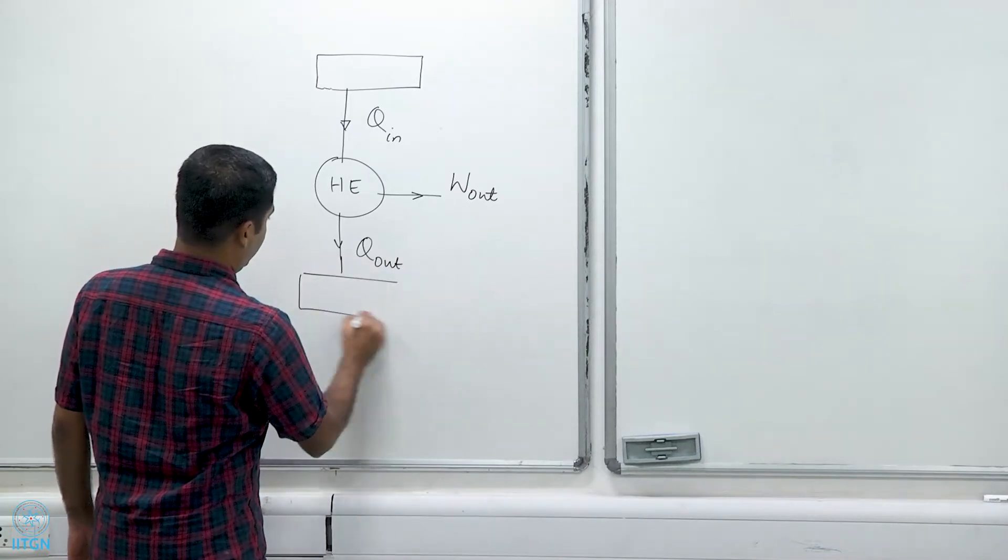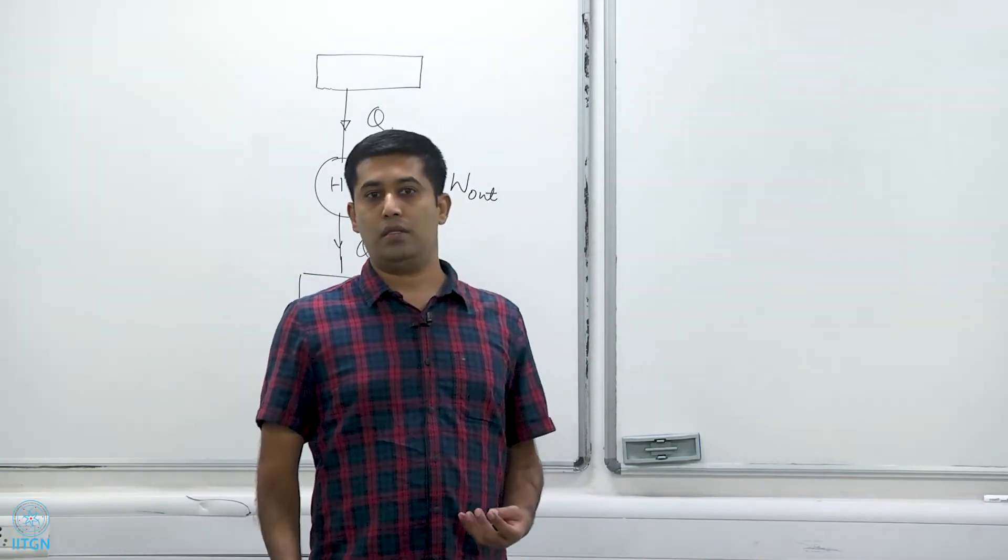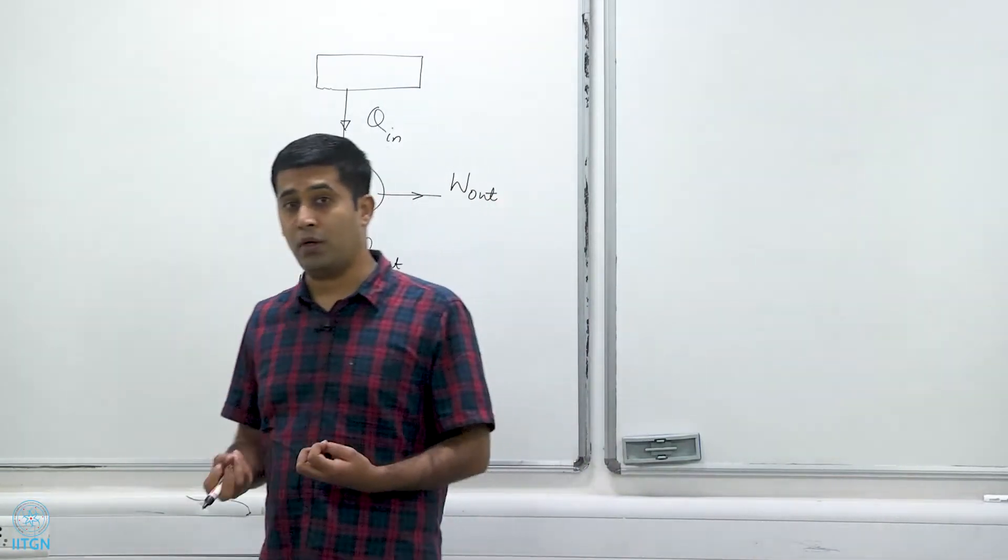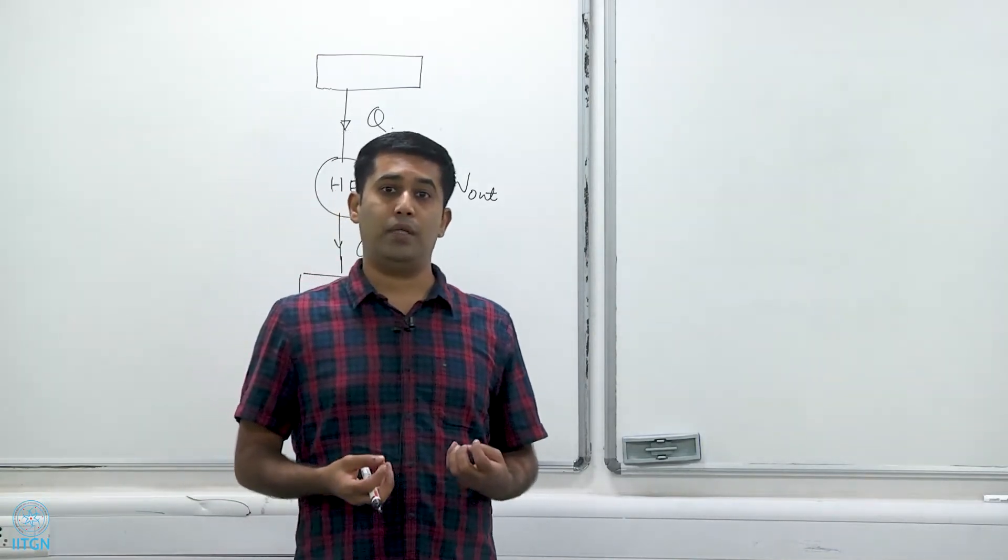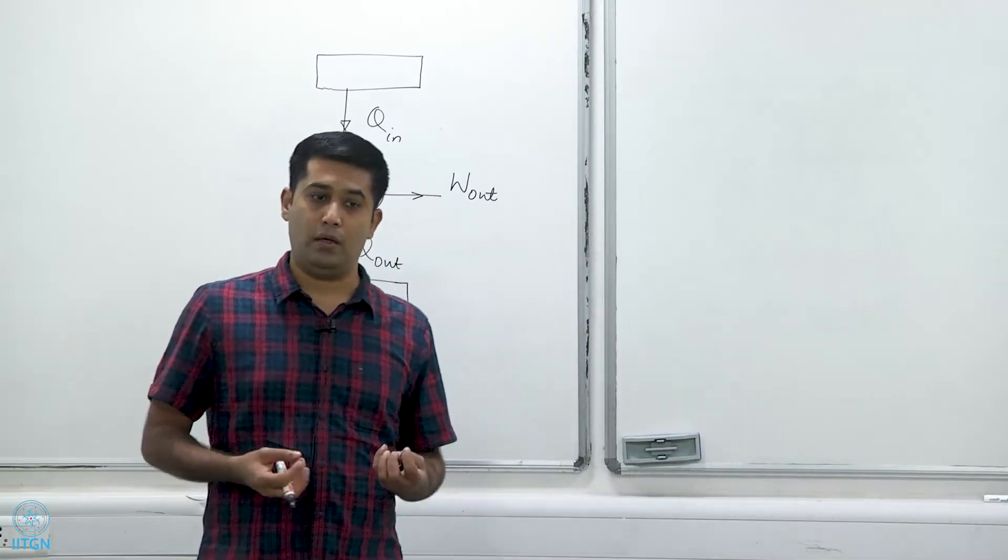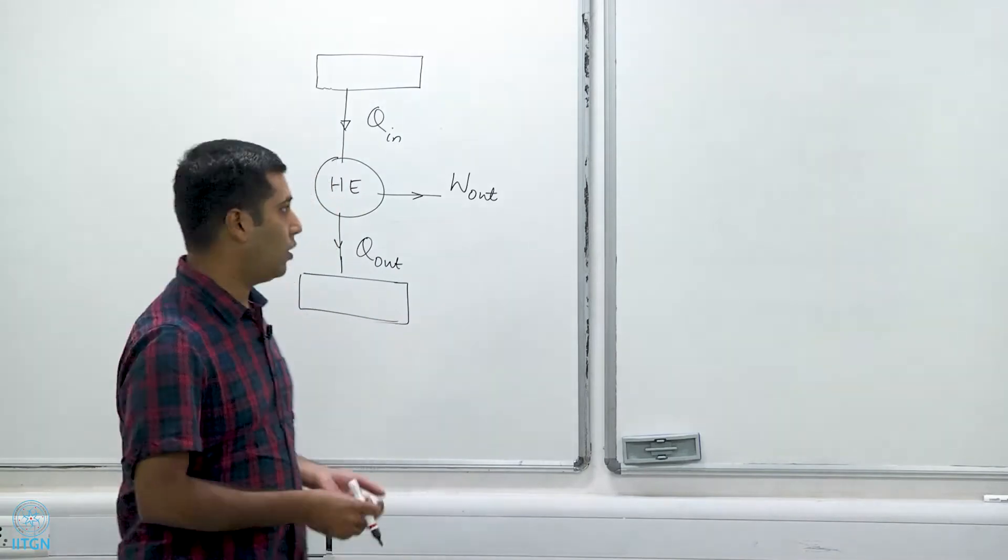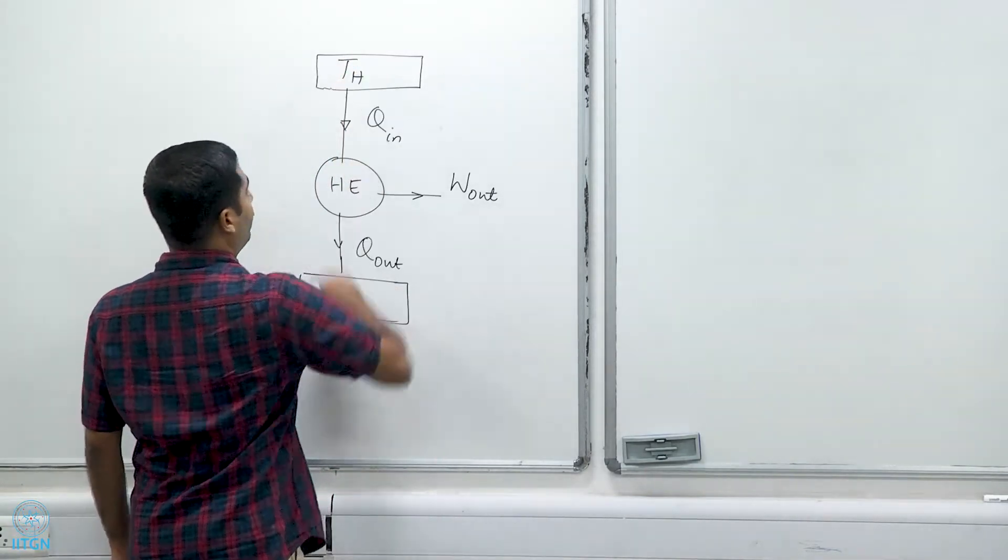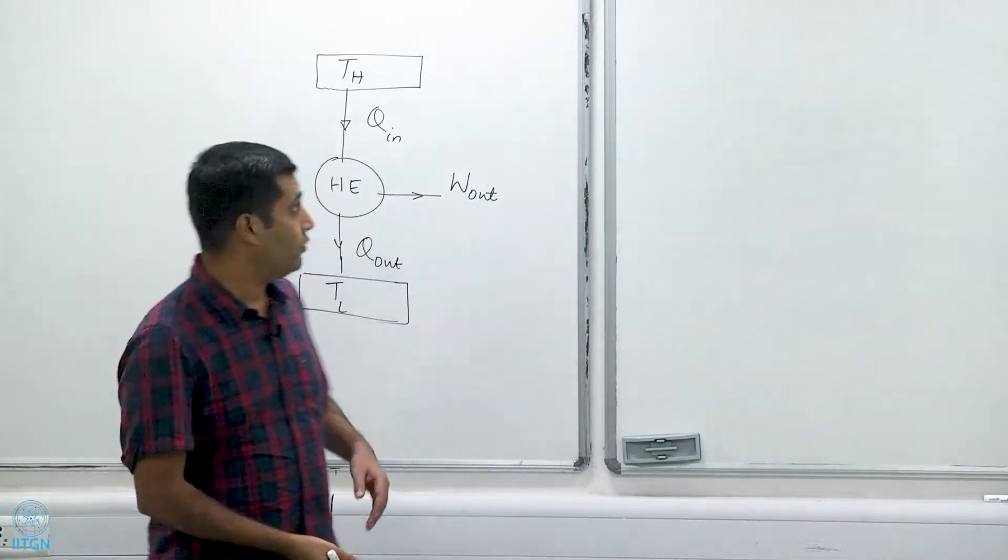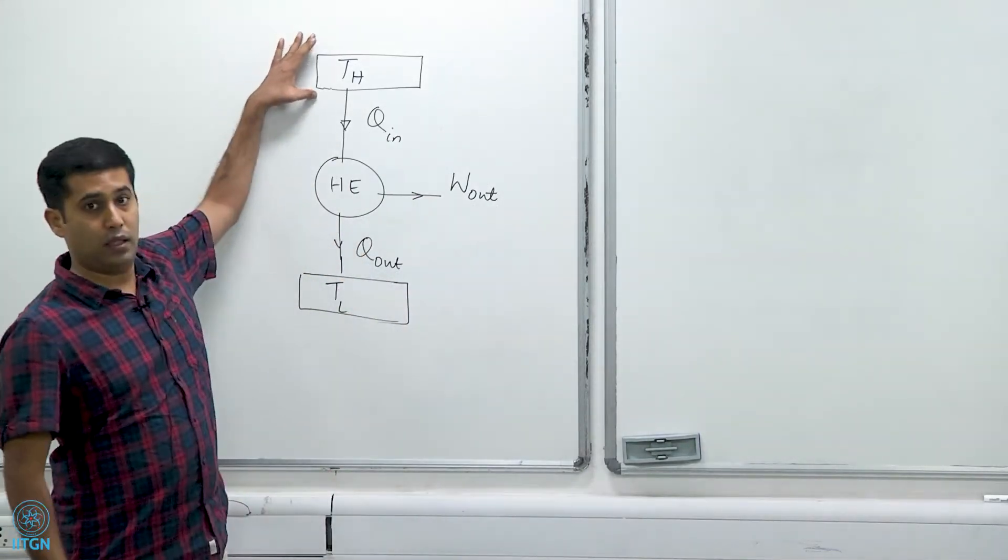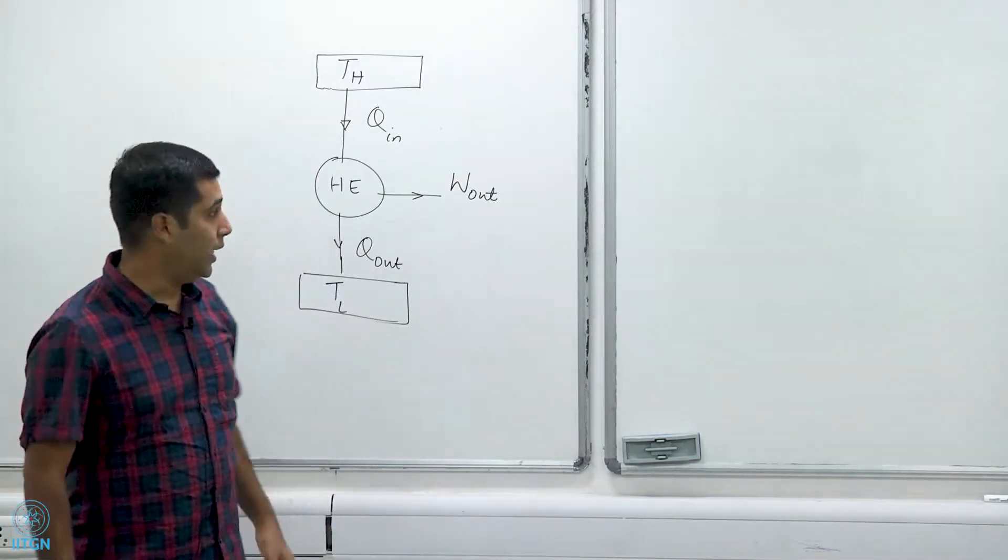Because the temperature of a reservoir does not change even though I add or subtract finite quantities of heat to the reservoir, a thermal energy reservoir can be labeled with the temperature that it is associated with. I will call this T_h, h standing for high temperature, and T_l, l standing for low temperature. So I have a high temperature reservoir, in other words a source, and a low temperature reservoir, in other words a sink.